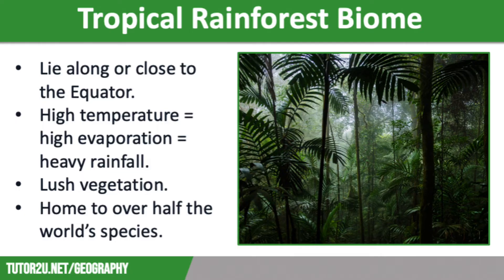We're now going to give a quick overview of the main characteristics of the different global biomes. Starting with tropical rainforests: they lie along or close to the equator and can be found in South America, Central Africa, Southeast Asia and Australia. Here the sun's rays are concentrated, which means high temperatures cause evaporation and the moist air that rises leads to heavy rainfall with very little seasonal variation. This belt of low pressure along the equator creates ideal conditions for plant growth, which is why the vegetation is so lush.